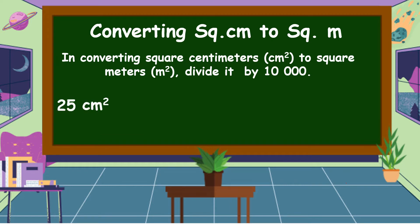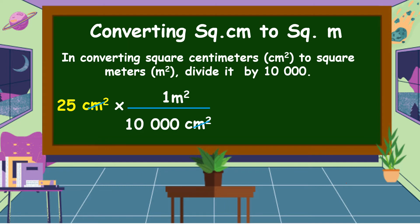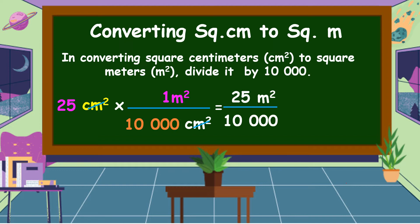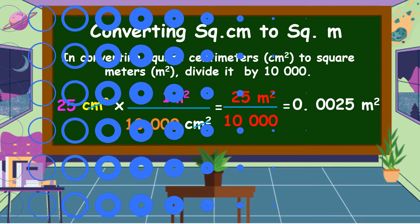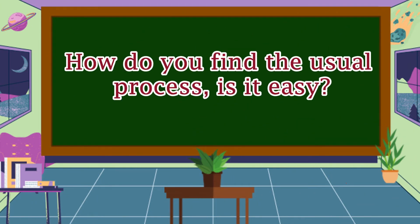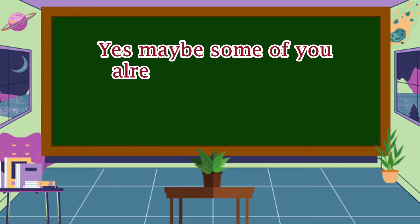For example, convert 25 square centimeters into square meters. We write the equation: 25 square centimeters times (1 square meter over 10,000 square centimeters). We cancel square centimeters, then 25 times 1 equals 25 over ten thousand. Therefore, 25 square centimeters equals 25/10,000 square meters.